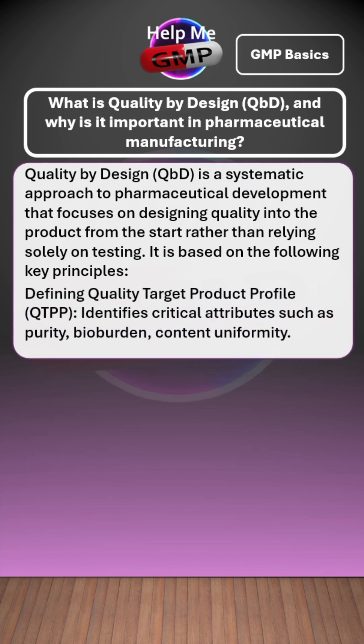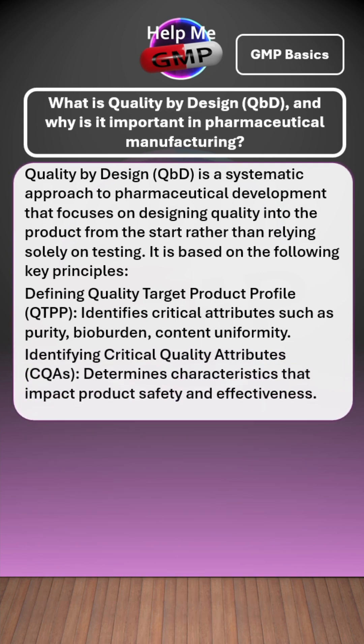Defining the quality target product profile, or QTPP, identifies critical attributes such as purity, bio-burden, and content uniformity. Identifying critical quality attributes, or CQAs, determines characteristics that impact product safety and effectiveness.